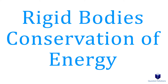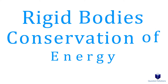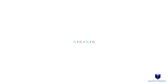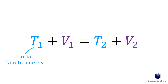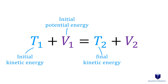When we have rigid bodies and they only experience conservative forces, we can use this formula to figure out unknown values. The first term is the initial kinetic energy and the second term is the initial potential energy. On the other side, we have the final kinetic energy plus the final potential energy.